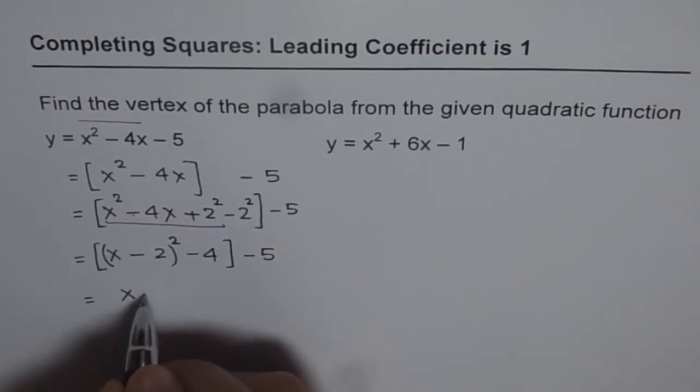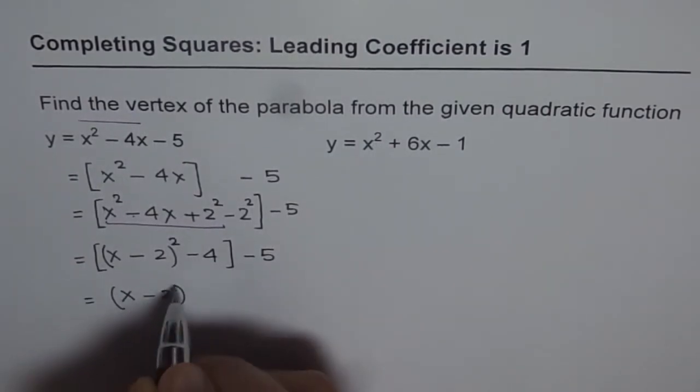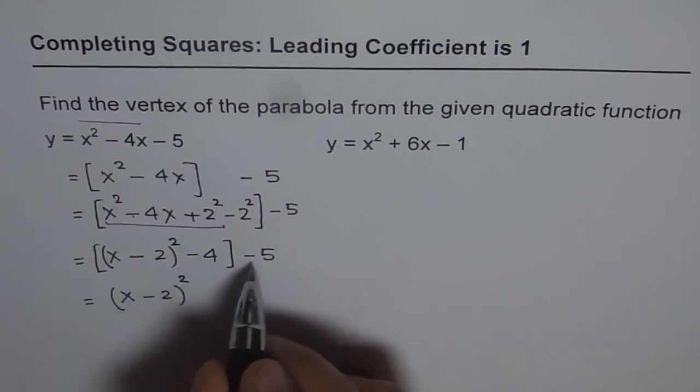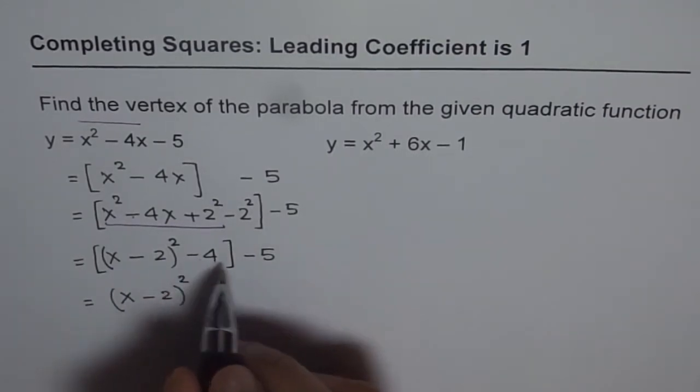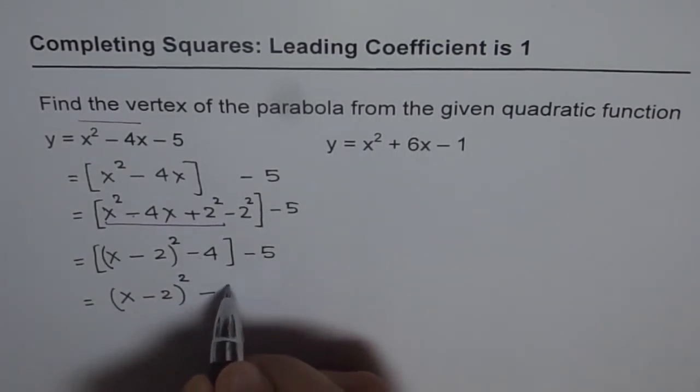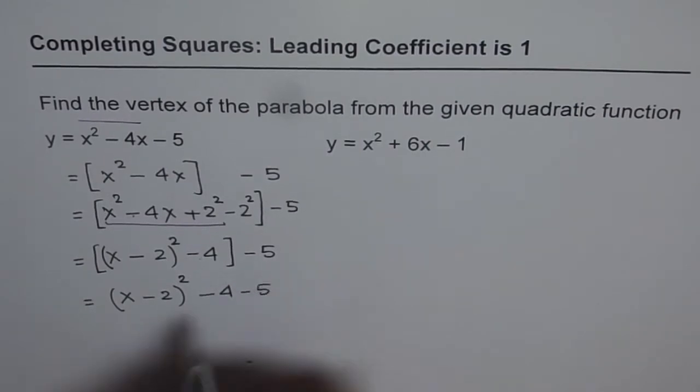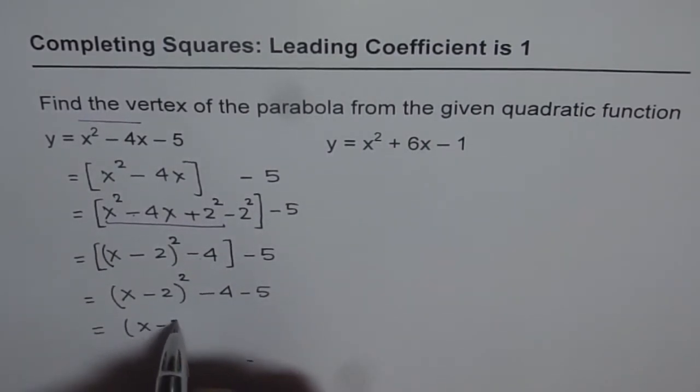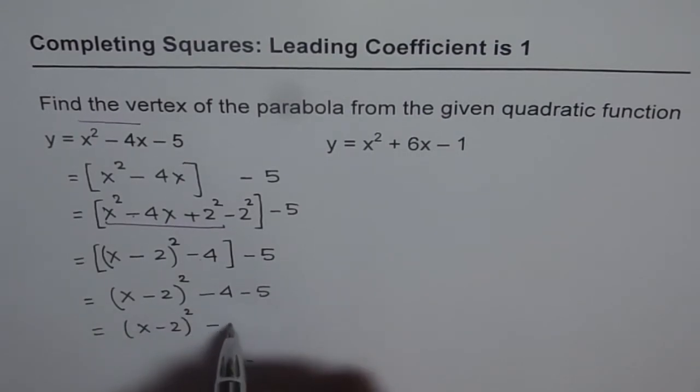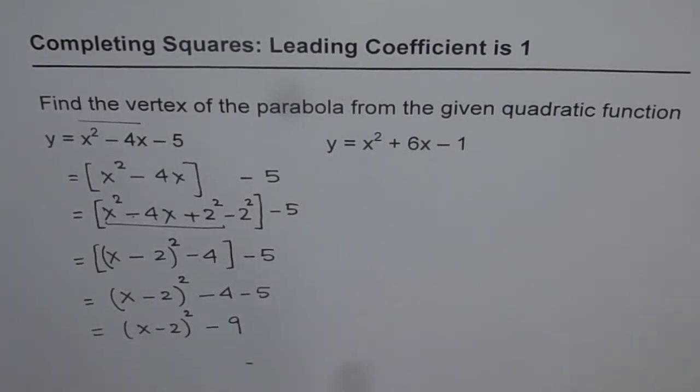When you open the brackets, it is x minus 2 whole square. Minus 4 minus 5 can be combined now. Minus 4 and minus 5, giving us the result, which is x minus 2 whole square minus 9. So that is the equation of a parabola in vertex form.